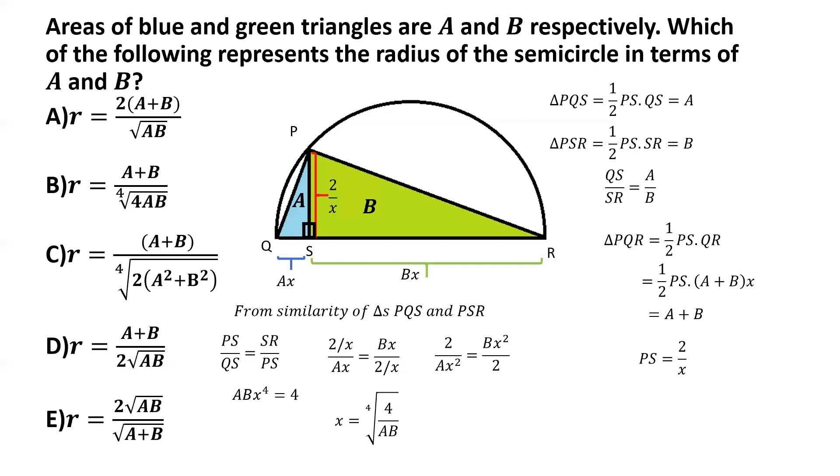So now we know the diameter of the semicircle is QR. And that's equal to AX plus BX. So the radius is really simply AX plus BX divided by 2.